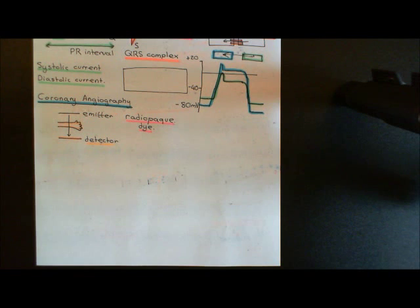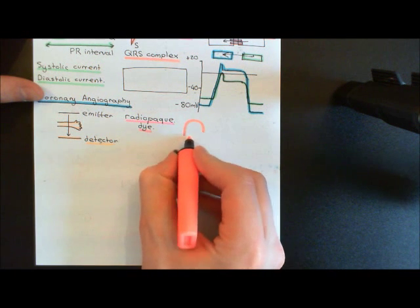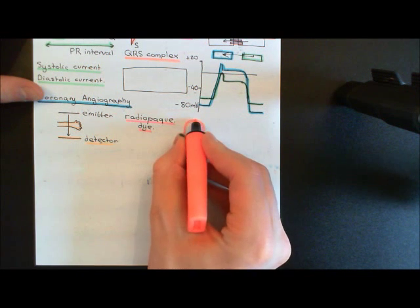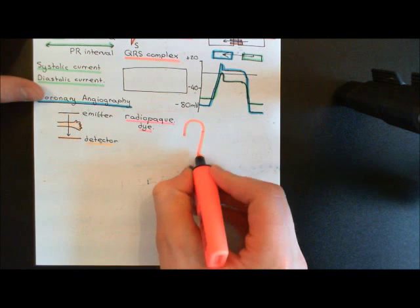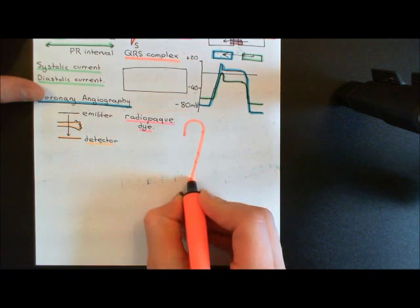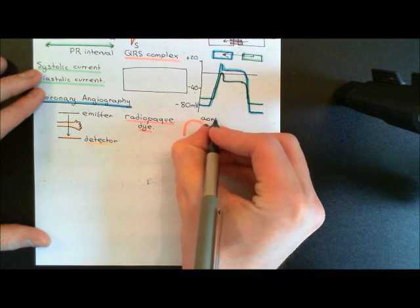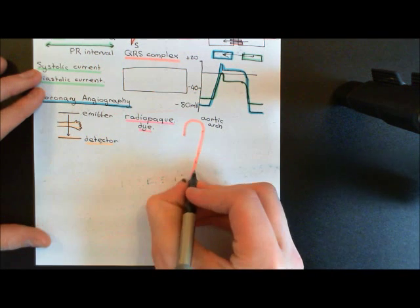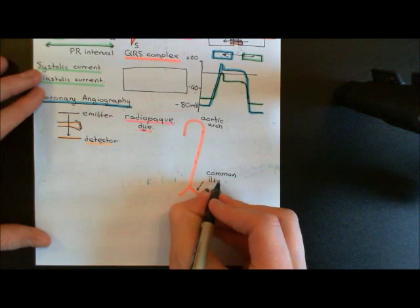The femoral artery is a continuation of the external iliac artery, which itself is a branch of the common iliac artery. Beginning with the aorta: it ascends upwards into a loop after coming out of the heart — this is the ascending aorta, then the aortic arch, then it descends at the back of the thoracic cavity as the descending aorta, continuing into the abdominal cavity where it splits into two major branches — the common iliac arteries.